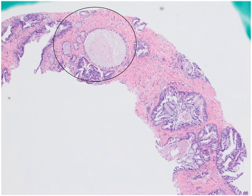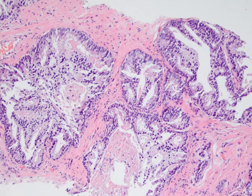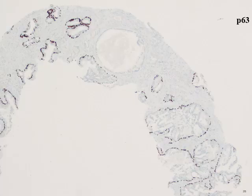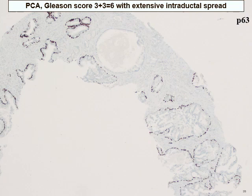In this type of situation, your differential diagnosis is either Gleason 4+3 or Gleason 3+3 with intraductal carcinoma. A basal cell marker p63 was performed in this case. On high power, the small well-formed glands lack basal cells, but all of the large expansile cribriform glands with dense architecture show intact basal cells. The diagnosis for this case is therefore Gleason score 3+3=6 with extensive intraductal spread.